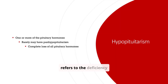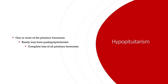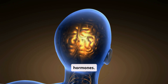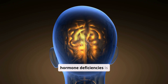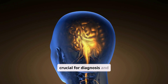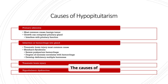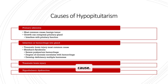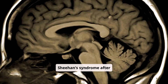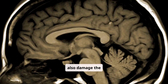Hypopituitarism refers to the deficiency of one or more pituitary hormones. In rare cases, it can lead to pan-hypopituitarism, a complete loss of all pituitary hormones. The causes are varied: primary adenomas, which are benign tumors, are the most common cause. Infarction or hemorrhage, especially in Sheehan's syndrome after postpartum hemorrhage, can also damage the gland.